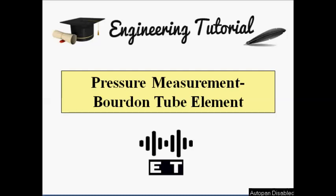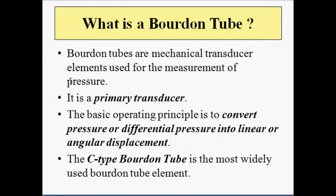So what is a Bourdon tube? The Bourdon tube is basically a mechanical transducer which is used for measurement of pressure at any point. It is a primary transducer, which means that the output will always be in the form of displacement — displacement of some movable end. Obviously it is going to be used in conjunction with a secondary transducer. It converts change in pressure into mechanical displacement.